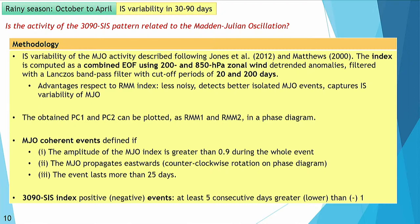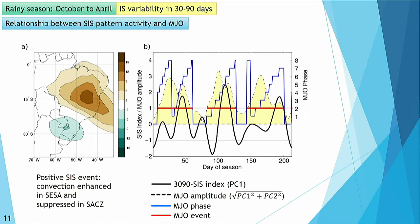An example for one season shows the 30-to-90-day SIS index in black, the MJO amplitude in the dashed line shaded yellow, and the MJO phase evolving from one to eight as the MJO changes phase and propagates eastward — a really nice example of the evolution of both indexes. What we tried to do was see the simultaneous relation between the SIS index and the MJO phases during which SIS events occur, following our previous studies.